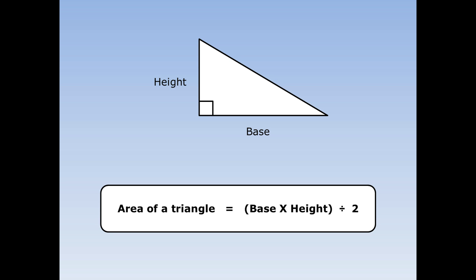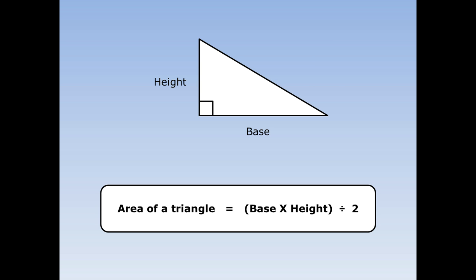The area of the triangle is base times height divided by 2. Why does this work? Look at this rectangle. The area of this rectangle is just the base times the height, but that accounts for two triangles — that's double what we want. So to work out the area of just one triangle, we do base times height divided by 2.